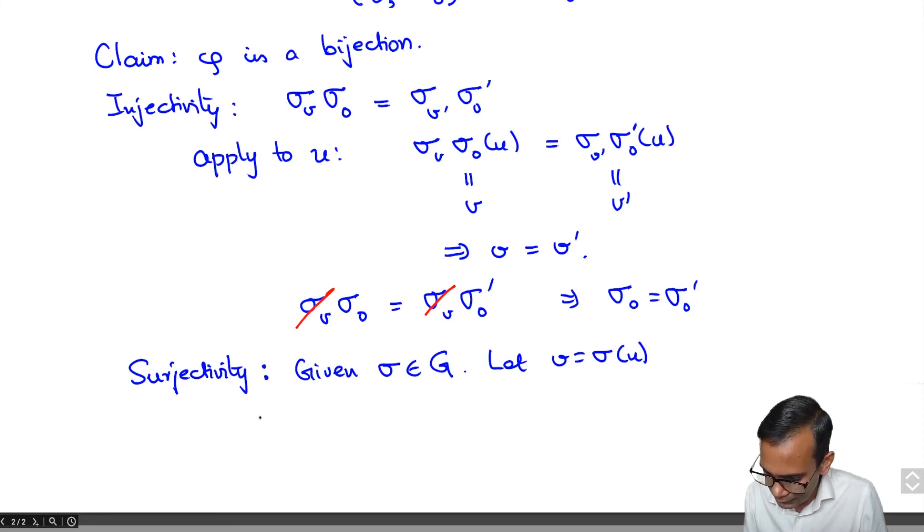Then what we have is that, if I take sigma V inverse, so V is sigma of U, and so let us take sigma V. Sigma V of U is V. So sigma V inverse of V is U. So sigma V inverse sigma of U is sigma V inverse of V which is equal to U.